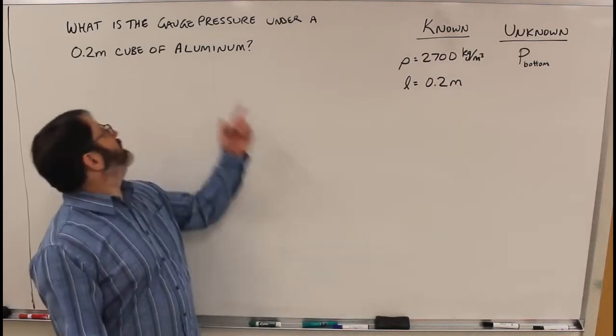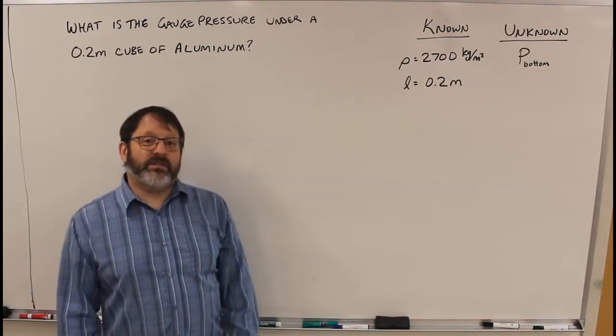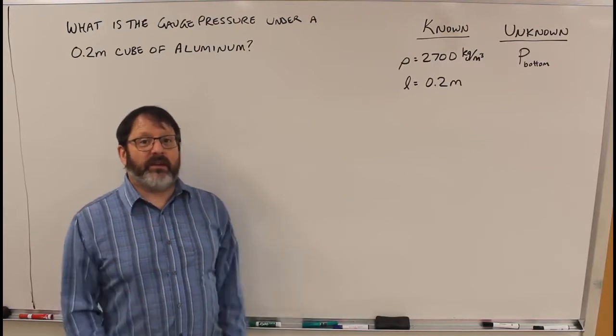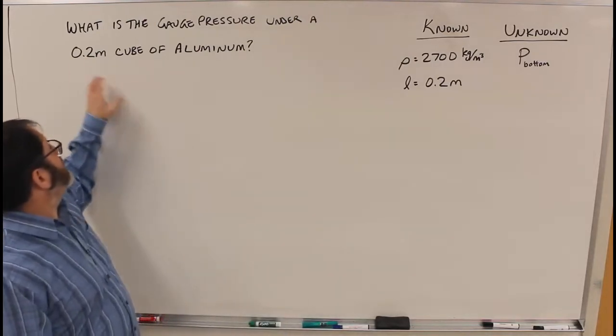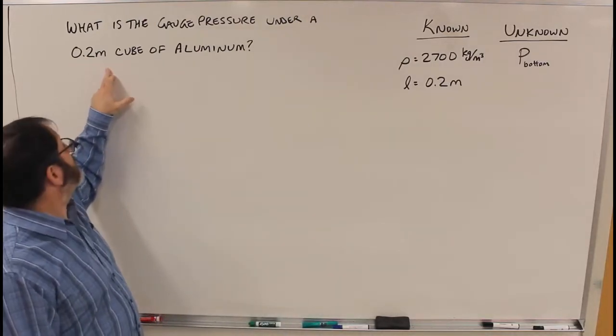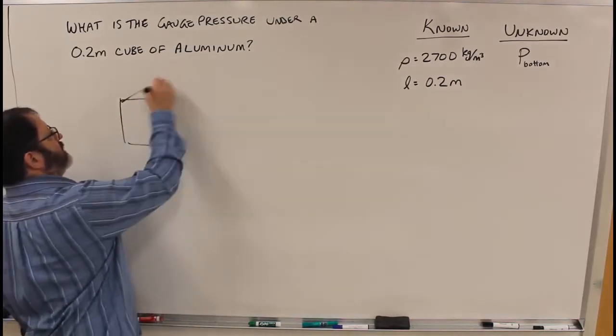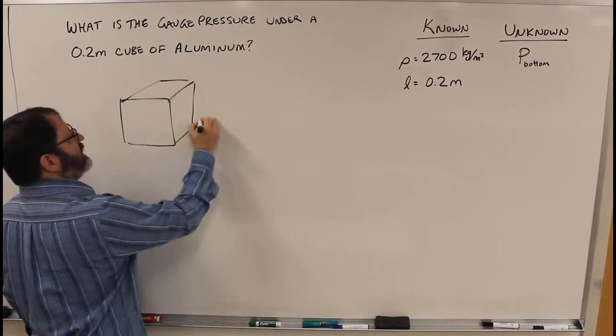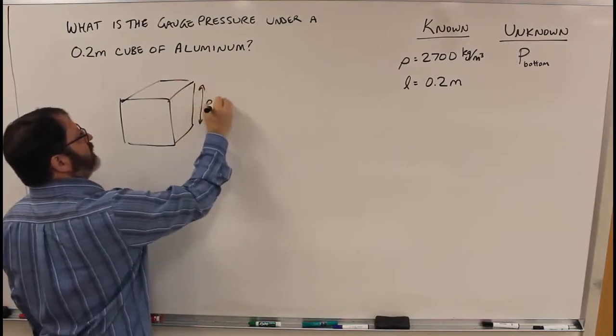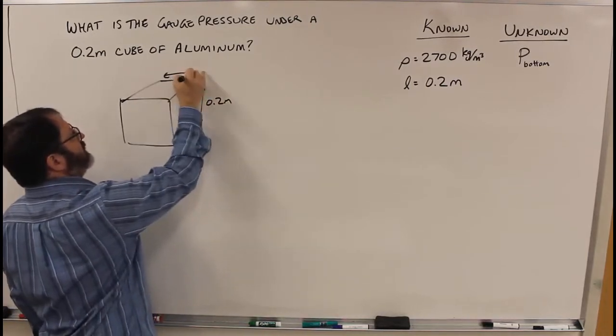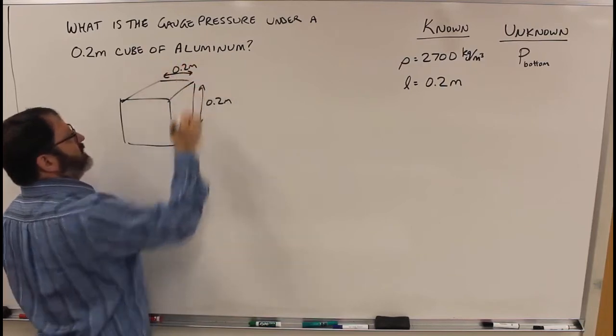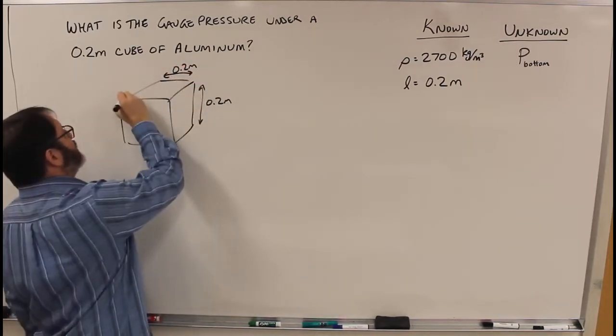In this video I'll look at the question of what's the gauge pressure under a cube of metal. In this example, a 0.2 meters cube, so that means every side of the cube is 0.2 meters because a cube is defined as having all the lengths the same.